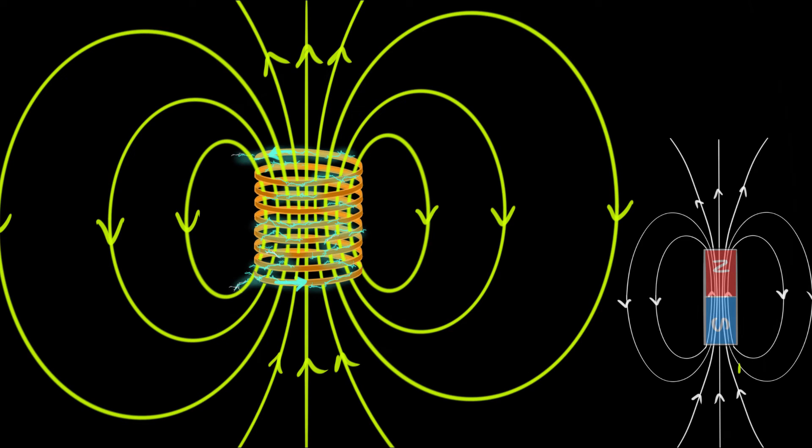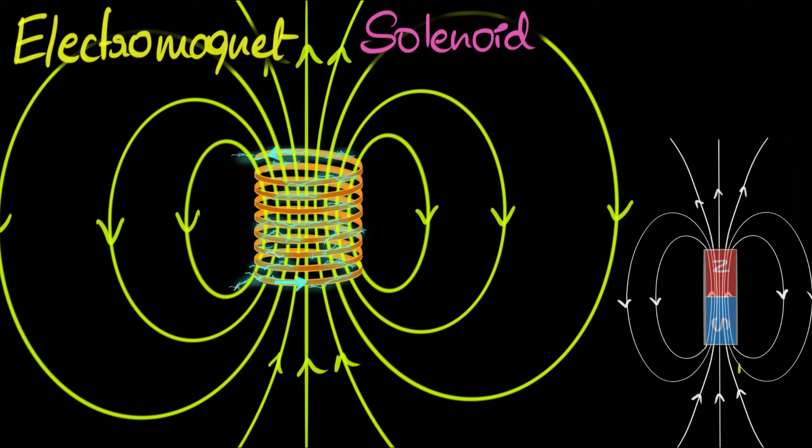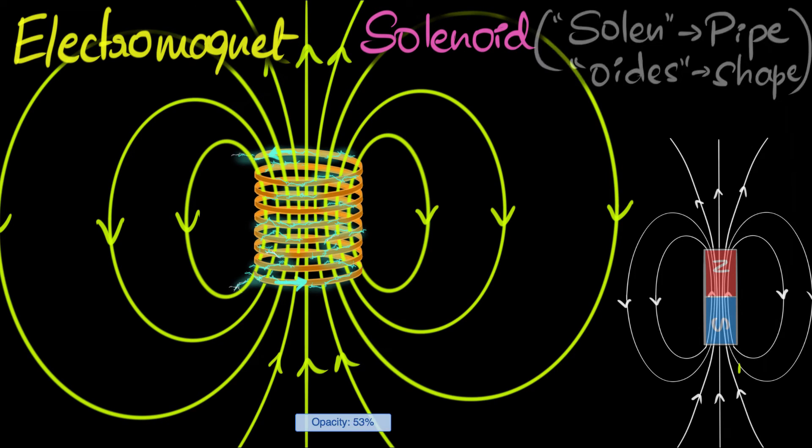And this particular electromagnet, which has a shape like a pipe or a tube because of so many coils, we give it a name. It's called a solenoid. And the word comes from German, solen, which means pipe, and oitus, which means shape. So whenever you coil something so much that it looks or resembles like a tube or a pipe, we tend to call it a solenoid.